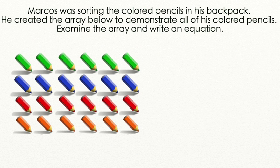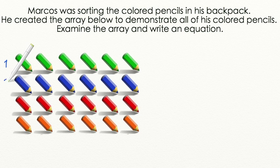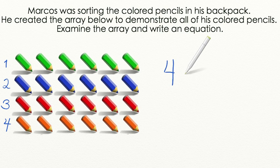Let's try another word problem together. Marcus was sorting the colored pencils in his backpack. He created the array below to demonstrate all of his colored pencils. Examine the array and write an equation. Let's start by finding out how many rows we have in our array — that is going to be the first number of our equation. We have 1, 2, 3, 4 rows, so that's going to be the first number in my equation.